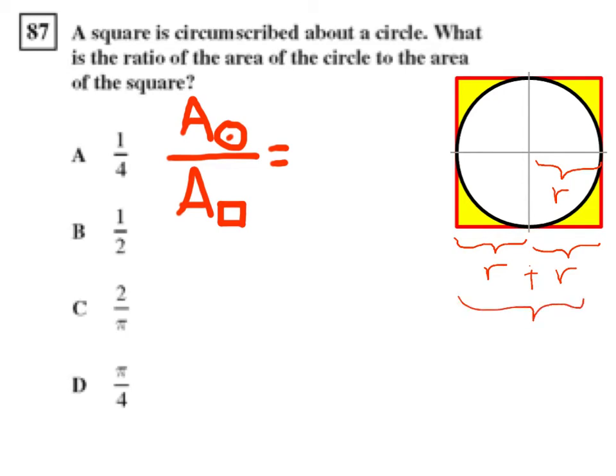So we have a length of the side of the square is two r. And we know that the formula for the area of the square is side times side, or in this case, I'll write side times side. And the area of the circle is pi times radius squared.